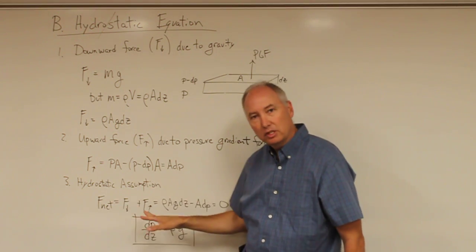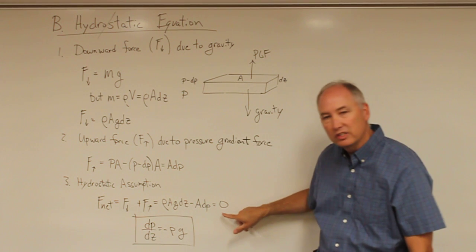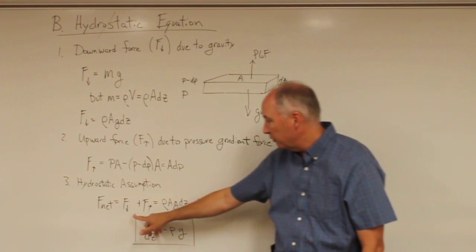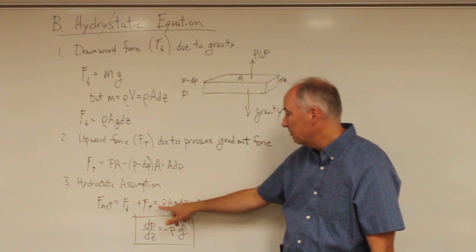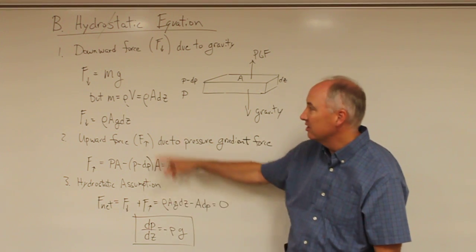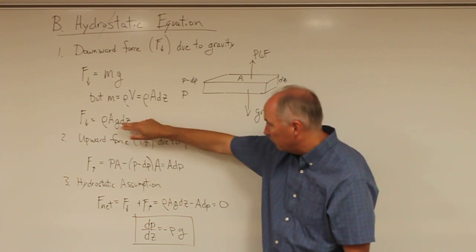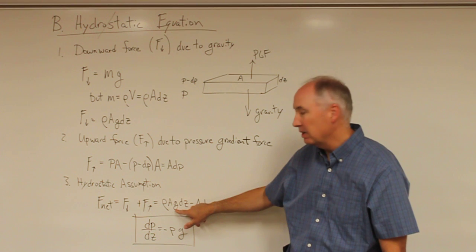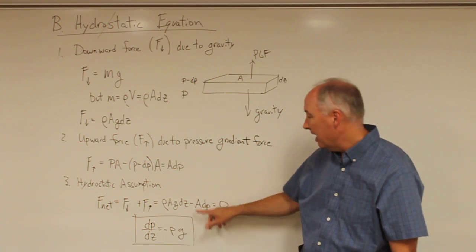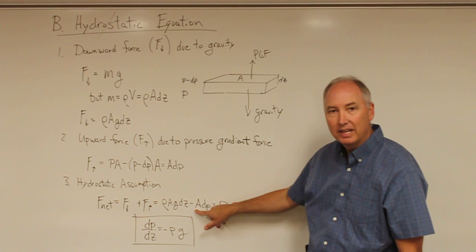The hydrostatic assumption, as I said at the beginning, assumes that the net force is equal to zero. So if we have the downward directed force plus the upward directed force is going to be equal to zero, then we can substitute in from these intermediaries. For the downward directed force, density times the cross-sectional area times gravity times dz, and then minus the upward directed pressure gradient force of the cross-sectional area times dP equal to zero.